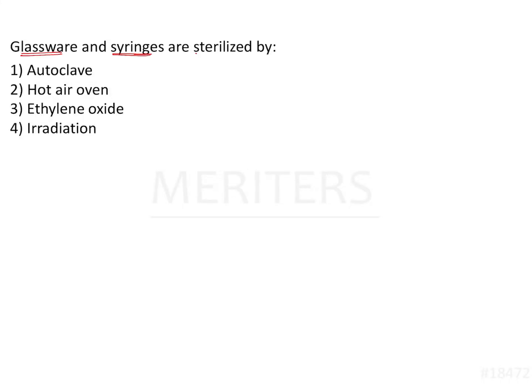Glassware and syringes are sterilized by means of which of the following given options? The various options are autoclave, hot air oven, ethylene oxide, and irradiation.